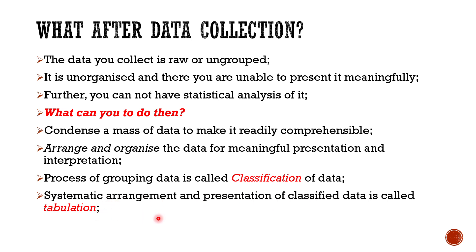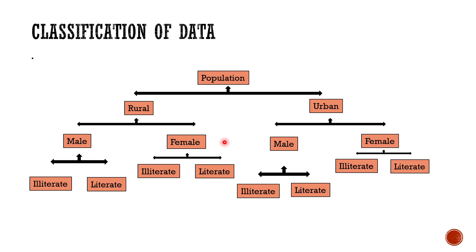Looking at this chart, we can understand classification of data. We have collected data on population and can classify it into rural and urban settlements. We can further divide population into male and female. So we get information on what percent of population lives in rural areas and urban areas, and within those, how many males and females are literate or illiterate in rural settlements.